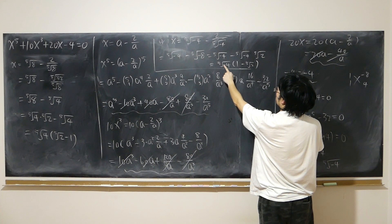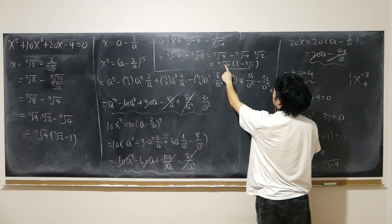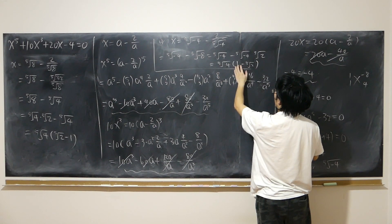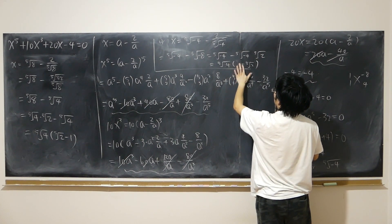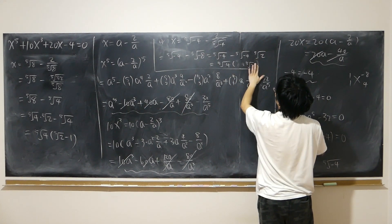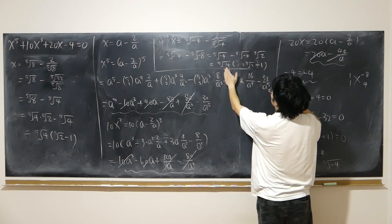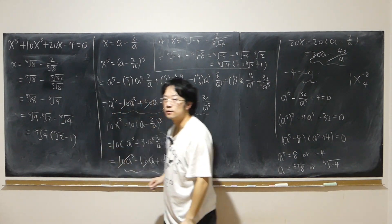We can distribute the negative sign — because it's an odd root, the negative stays. Distributing the negative onto the bracket just switches the two numbers, so it becomes the 5th root of 4 times (5th root of 2 minus 1). So both values of a give the same x — not surprising.